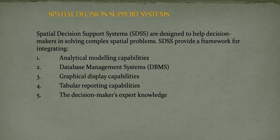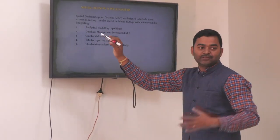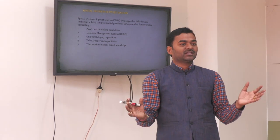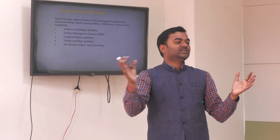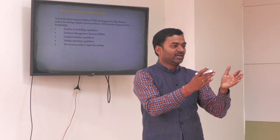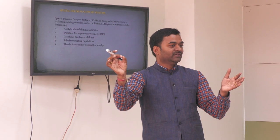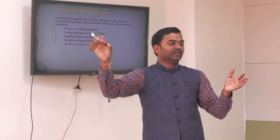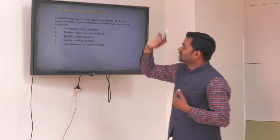These are the Spatial Decision Support System (SDSS) components: analytical modeling, database management, graphical display capability, tabular reporting, and decision maker/expert knowledge. These are the five inputs for a spatial decision system. Once modeled, the decision maker does not need to be a GIS master — they can use a drop-down menu, select 'check dams,' select their geographical area such as district, block, or village, and the system will calculate and show all suitable locations.